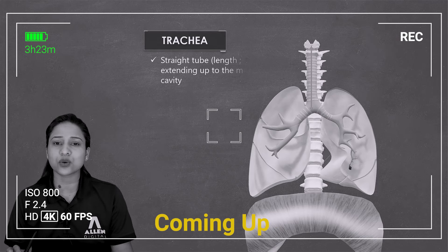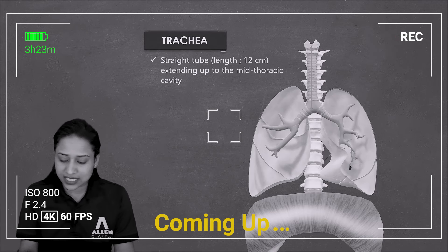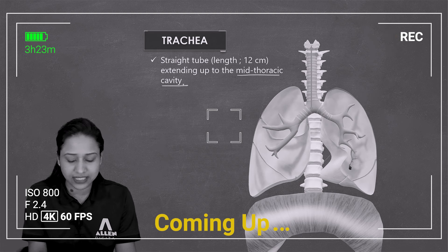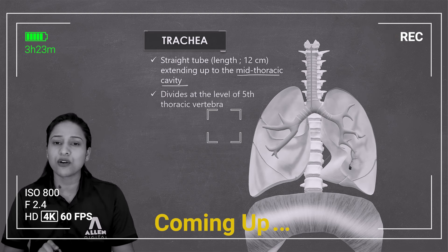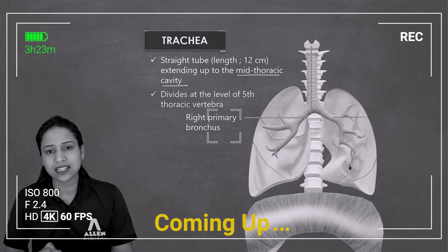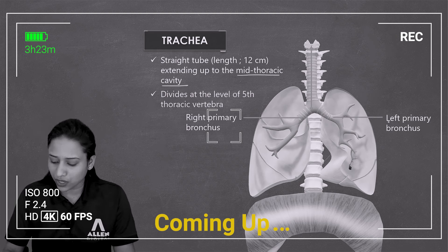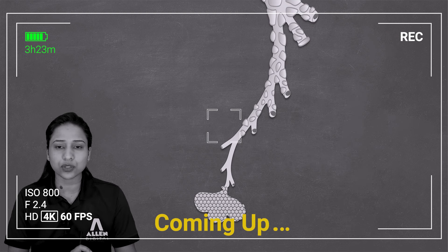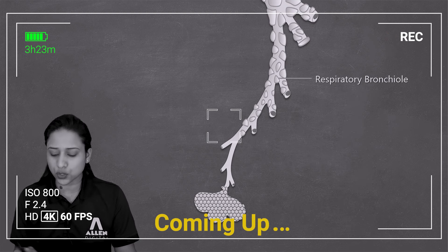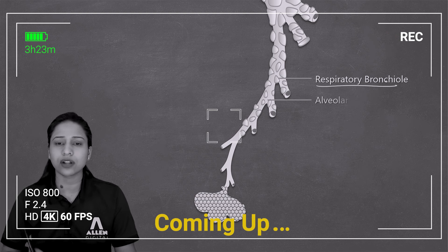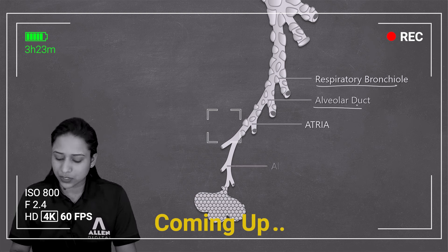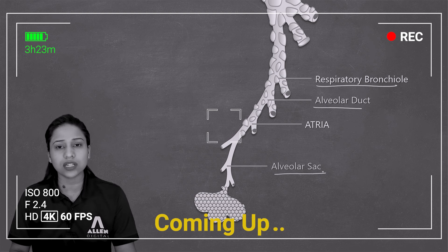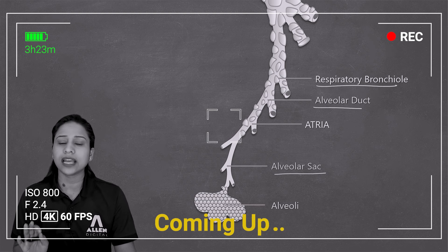This is the trachea. The trachea is a straight tube that extends to the mid thoracic cavity, and it divides at the level of the 5th thoracic vertebrae into right and left primary bronchi. Terminal bronchioles open into respiratory bronchioles. Respiratory bronchioles open into alveolar duct, then to an atria, then to an alveolar sac, and finally to an alveolus.